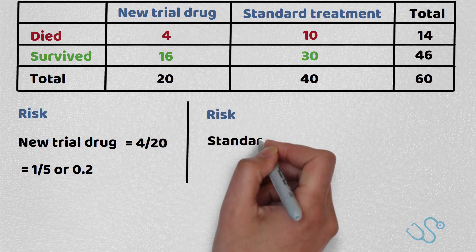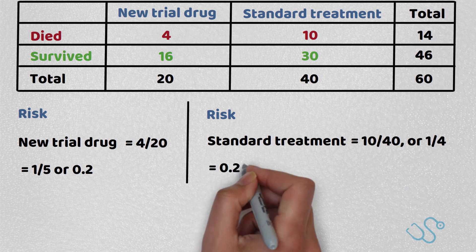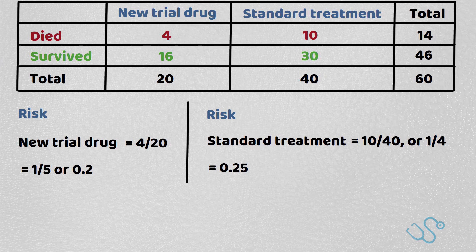To work out the risk of the standard treatment, it'll be 10 out of 40, or 1 over 4, which is 0.25. Remember, in this case, we're looking at the risk of death occurring as we're examining mortality.